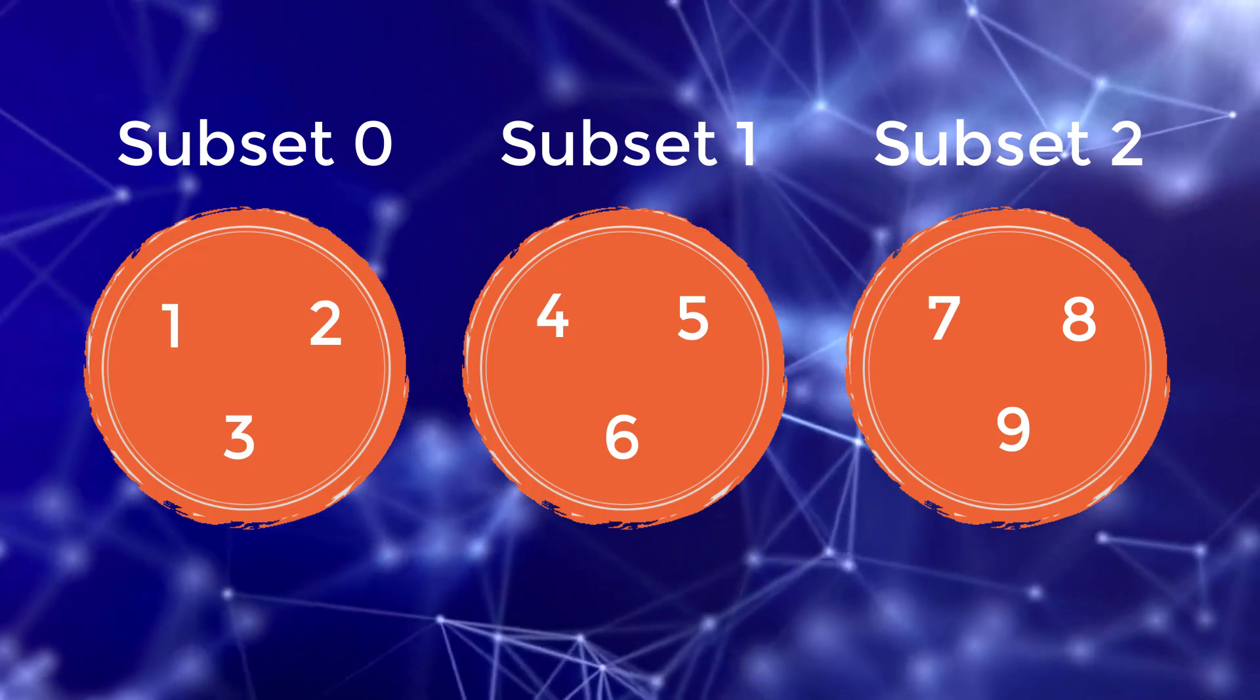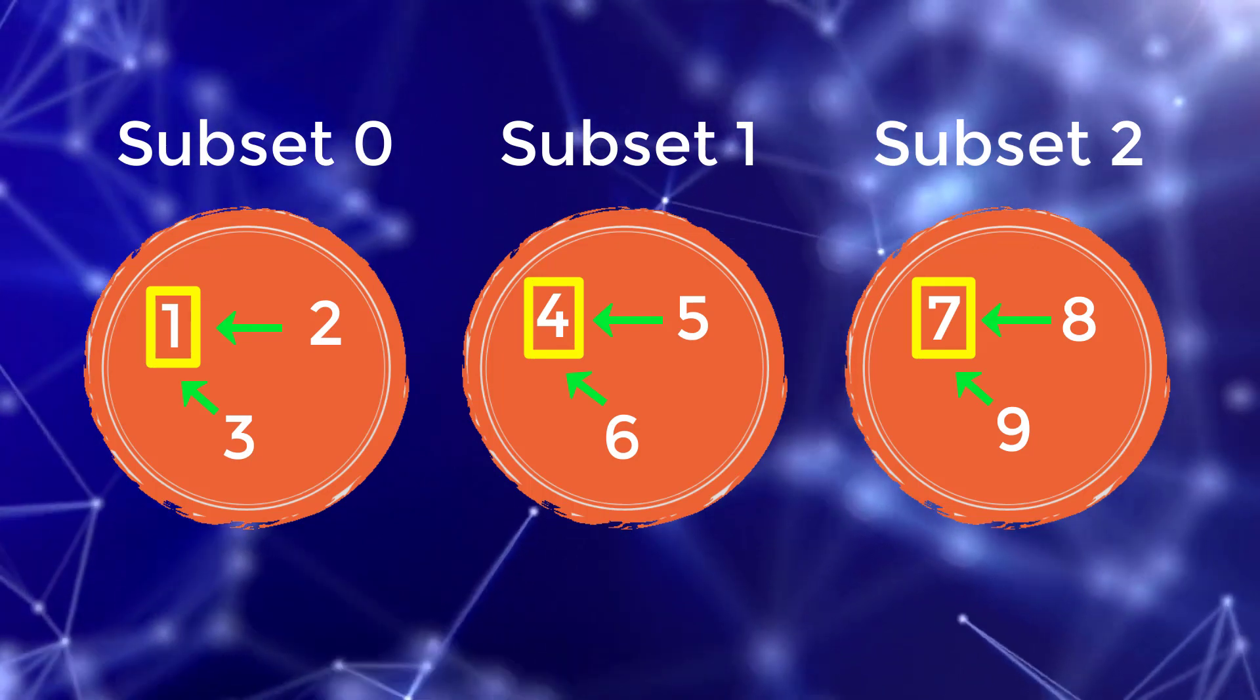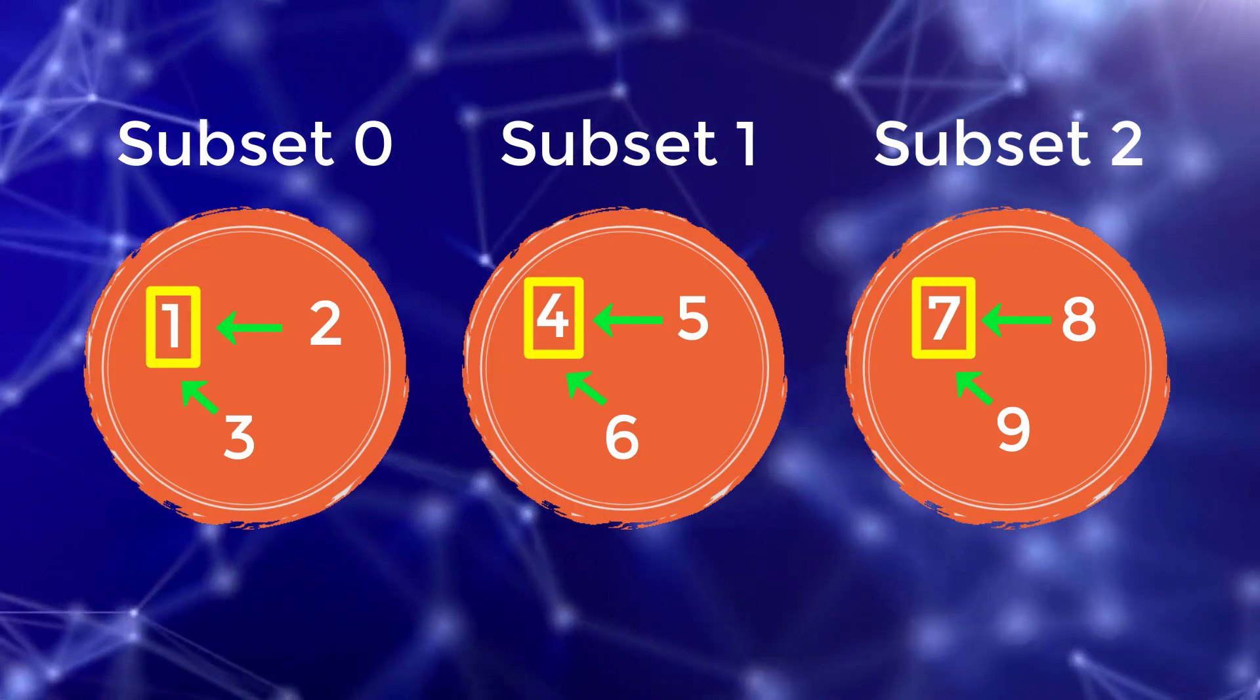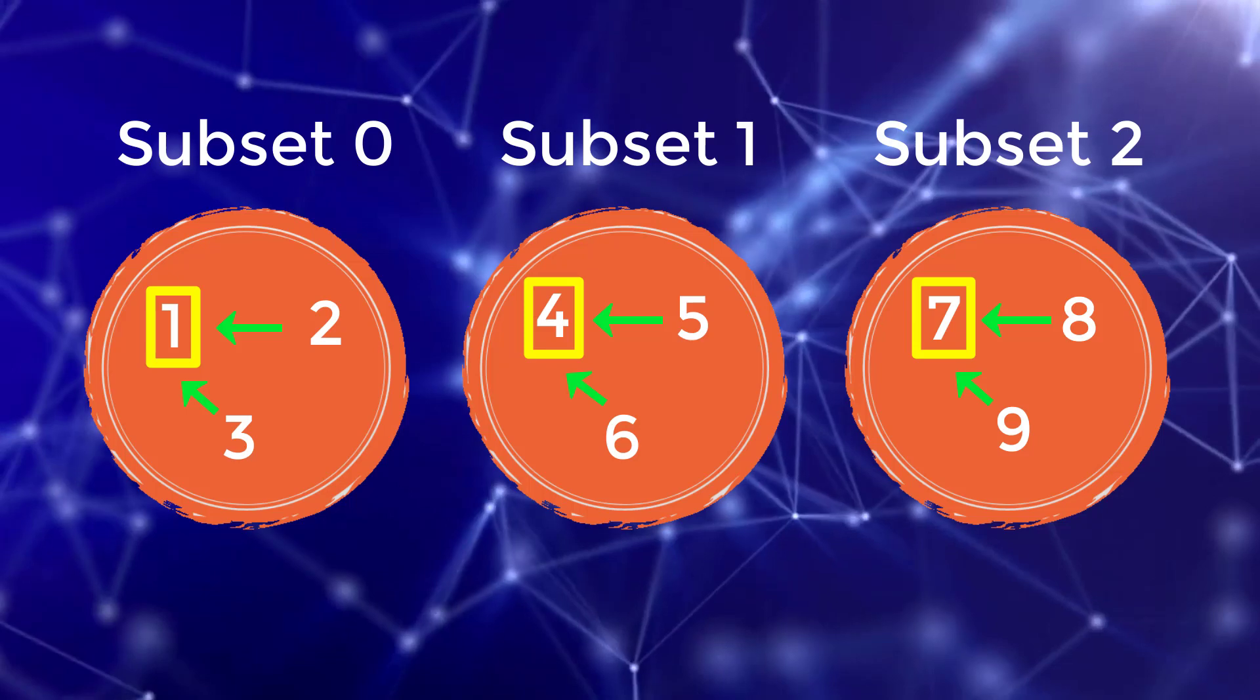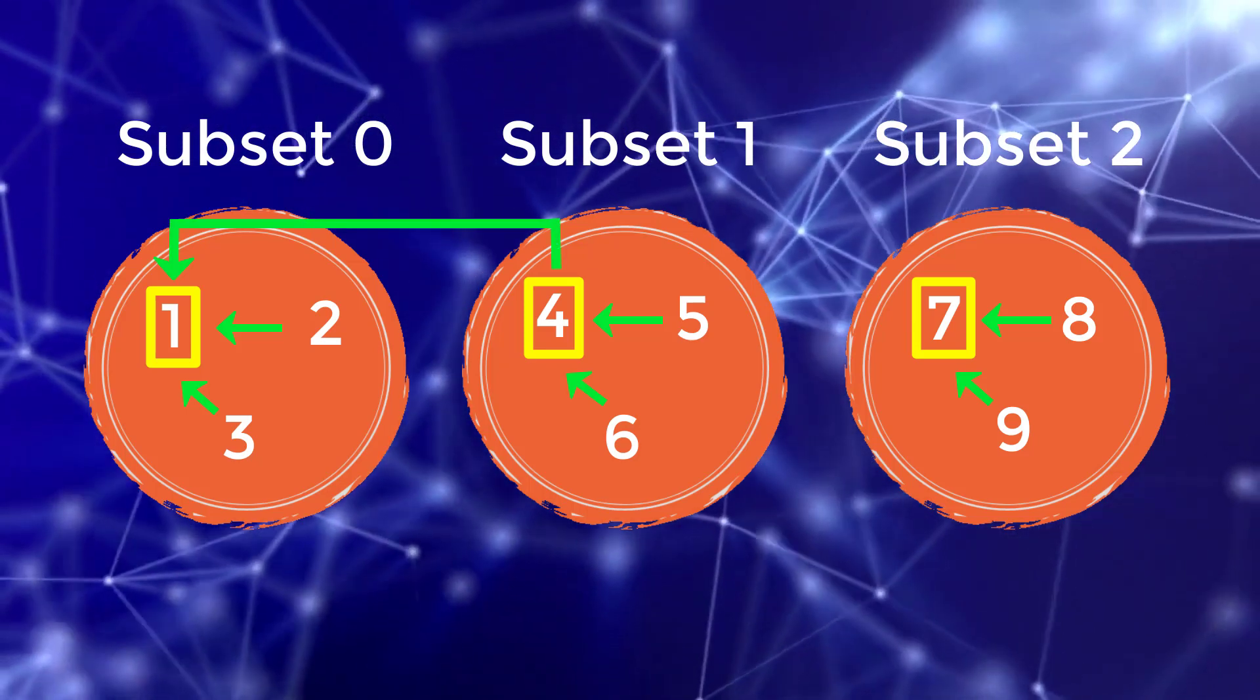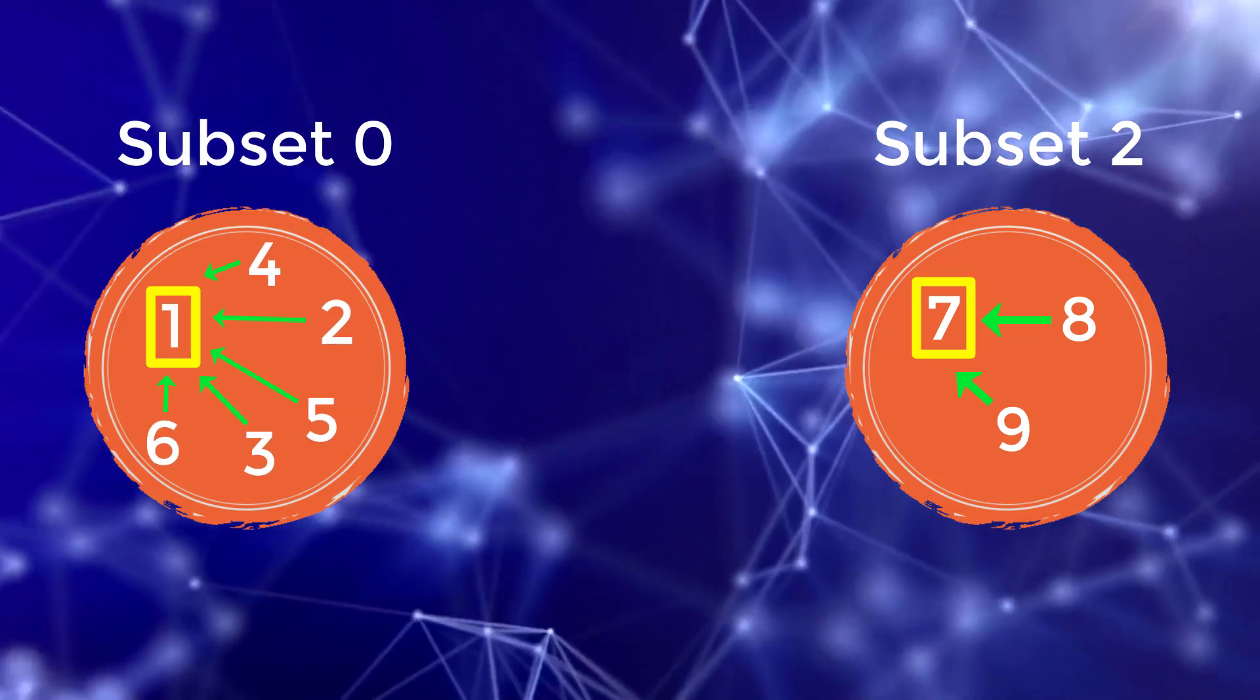Each subset has a parent where all the numbers inside of the subset point to that specific parent. So I can say merge subset zero and subset one, causing zero and one to just become a single subset. And this is done in an efficient manner because all we have to do to merge is change the parent of subset one to point to the parent of subset zero. And now all the numbers in subset one have been merged into subset zero.